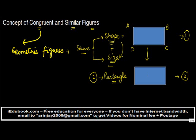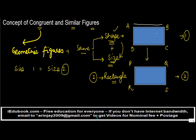The size of Figure 2 is exactly the same. If I call this as P, Q, R, S, the size of Figure 2 is equal to the size of Figure 1. When we compare Figure 1 and Figure 2, both of them are of the same shape — they are both rectangles — and they are both of the same size. Whatever is the length of AB, that will correspond with the length of PQ. Whatever is the length of DC, that will correspond to the length of RS. Whatever is the length of AD should be equal to the length of PR, and whatever is the length of BC should be equal to the length of QS.